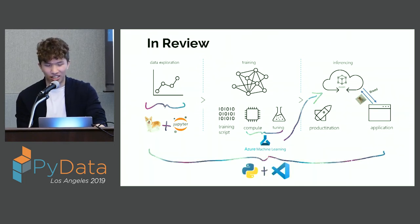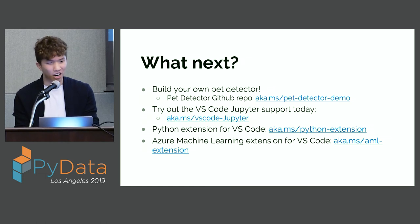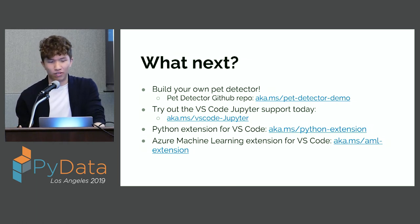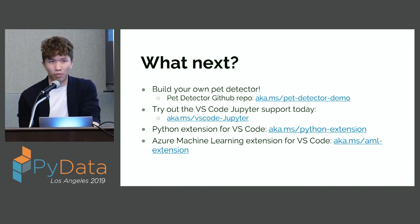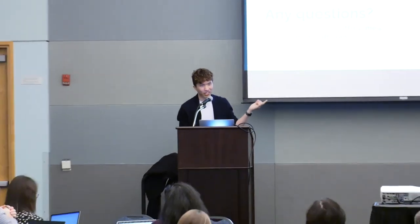You can actually build your own pet detector just like I did — here's a link to the GitHub repo. You could also train it for whatever you want, like a Pokemon detector. Try out the VS Code Jupyter support today — it just came out in October and our team worked on it. For more information, there's a link for the Python extension where the Jupyter Notebook support lives, and a link for Azure Machine Learning Service for hyperparameter tuning and deploying to the cloud. Thank you for your time — if you have any questions, reach out to me on Twitter or email. We're also at the VS Code Microsoft booth right outside.